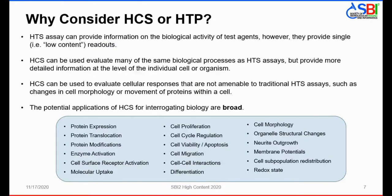Why consider HCS or HTP? Traditional HTS assays provide single, low-content readouts. In contrast, high-content screening can evaluate many of the same biological processes or provide more detailed information at the level of the individual cell or organism. HCS can also evaluate cellular responses not amenable to traditional assays, such as changes in cell morphology or protein movement within a cell. Applications for HCS assays include protein translocation, cell surface receptor activation, cell viability, apoptosis, proliferation, and a variety of other biological processes.